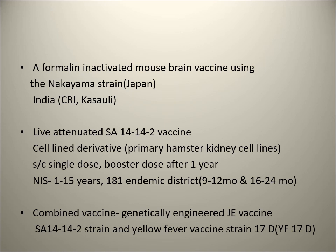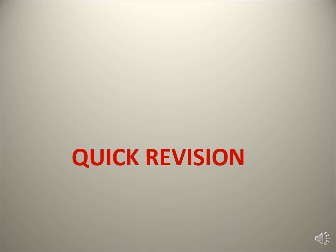The now preferred vaccine is the live attenuated SA 14-14-2 vaccine, which is a cell-line derived vaccine grown on primary hamster kidney cell lines. It is given subcutaneously as a single dose with a booster after one year. Under the National Immunization Schedule, children 1-15 years are targeted in 181 endemic districts across four primarily affected states: Uttar Pradesh (maximum cases, especially Gorakhpur), Karnataka, West Bengal, and Assam. First dose at 9-12 months, second dose at 16-24 months, 0.5 ml per dose. A combined genetically engineered JE SA 14-14-2 and Yellow Fever 17D vaccine is also under development.